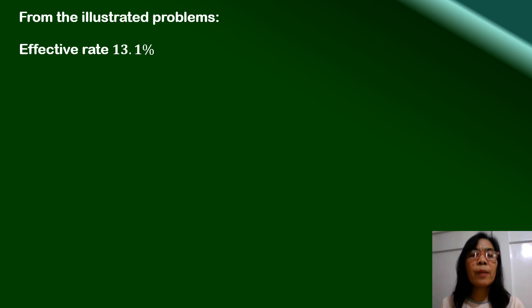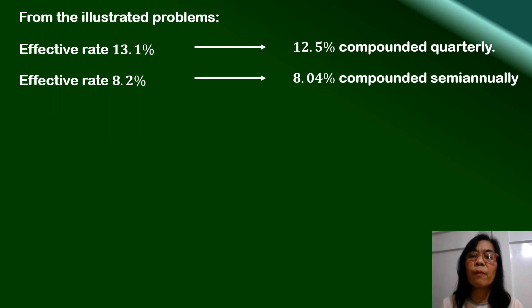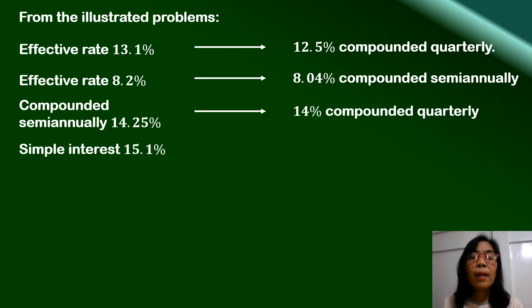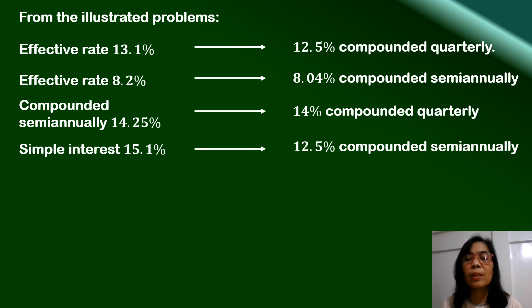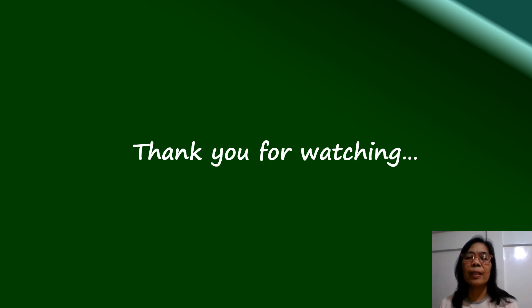Based on the illustrated problems, an effective rate of 13.1% is equivalent to a nominal rate of 12.5% compounded quarterly; an effective rate of 8.2% is equivalent to 8.04% compounded semi-annually; a nominal rate of 14.25% compounded semi-annually is equivalent to 14% compounded quarterly; and a simple interest rate of 15.1% is equivalent to 12.5% compounded semi-annually. It is important to note that for equivalent rates, the more often the conversion is done, the lower the rate. Thank you for watching.